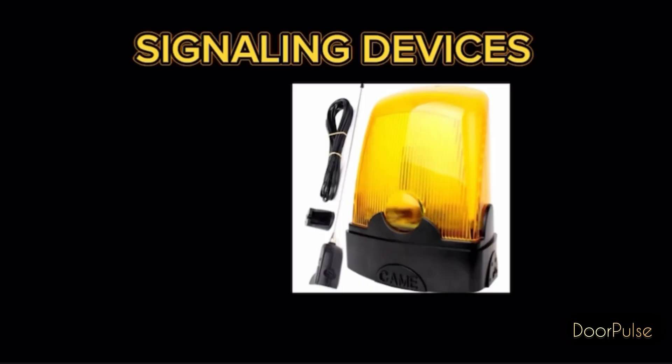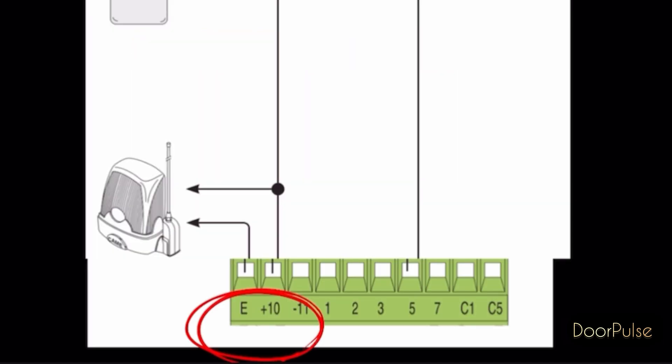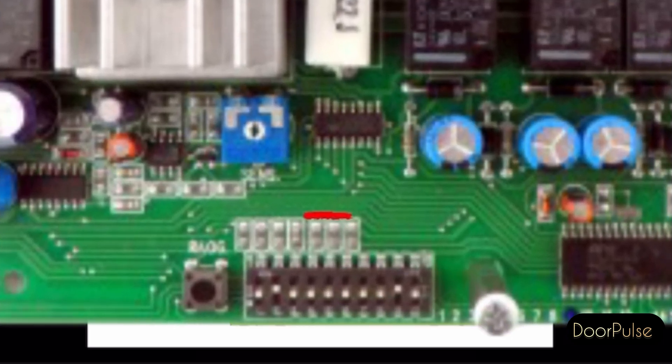Signaling devices: pin 10 and pin E is the output for flashing light. Contact rated for 24V and 32W max. It flashes when the boom is moving. You can activate the flashing for when the boom is moving and when it is closed. See dip switch 3. Dip switch we discussed in next video.